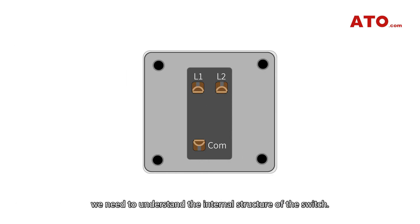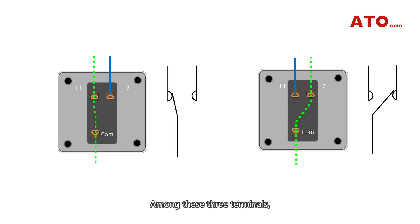Before explaining the control method we need to understand the internal structure of the switch. There are three wiring terminals inside. Among these three terminals usually L1 is connected to Com or L2 is connected to Com depending on the position of the switch. You can switch them as you wish.